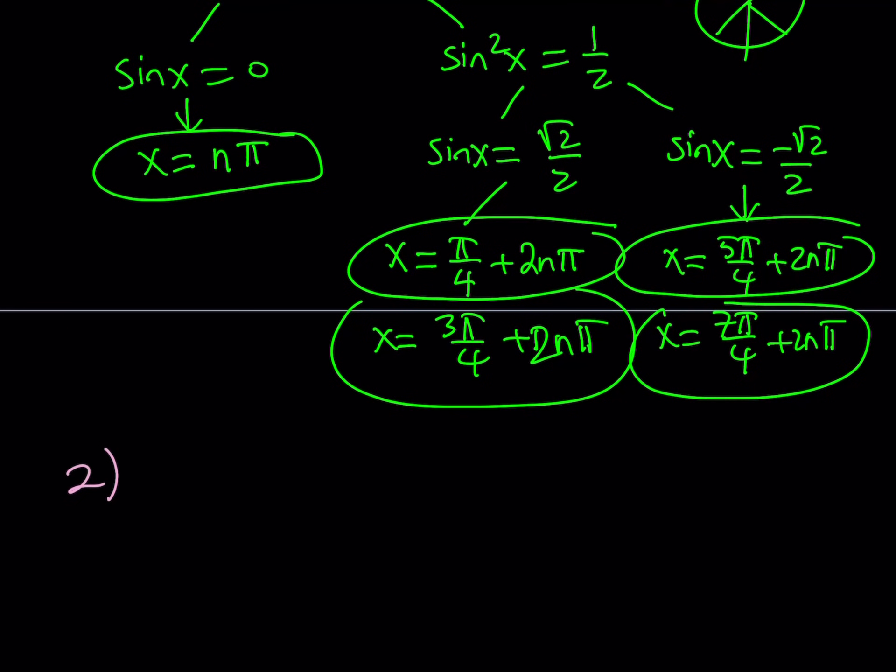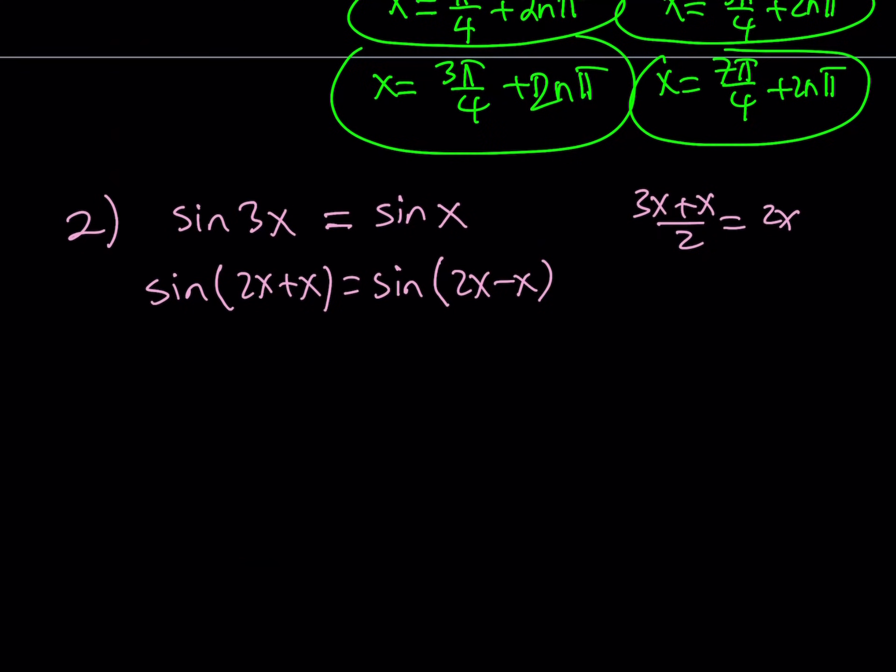The second method involves writing this as a sum and difference. So, the average of 3x and x is 2x, therefore, I can write this as sine of 2x plus x, and sine of 2x minus x. Great. This is a really good strategy that we use with sum to product formulas, and now I can expand it.